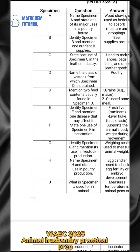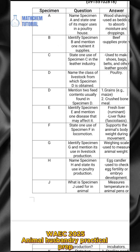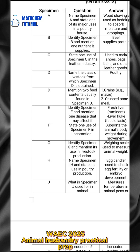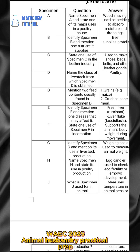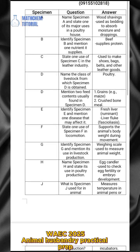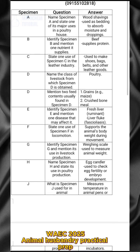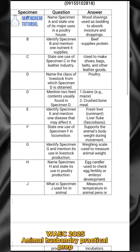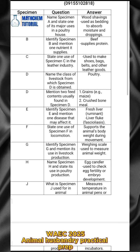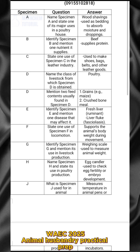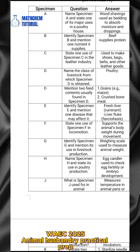For specimen D, name the class of livestock from which specimen D is obtained. The answer is poultry. Also for specimen D, mention two feed contents usually found in it. The answers are: one, grains — for example, maize — and two, crushed bone meal.